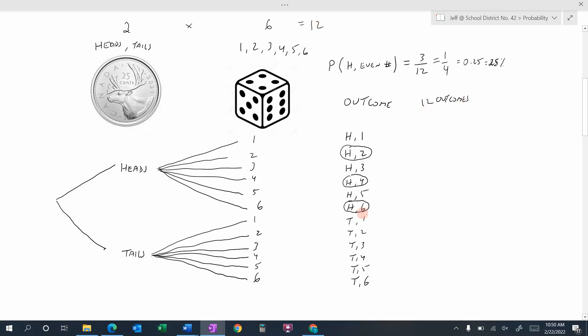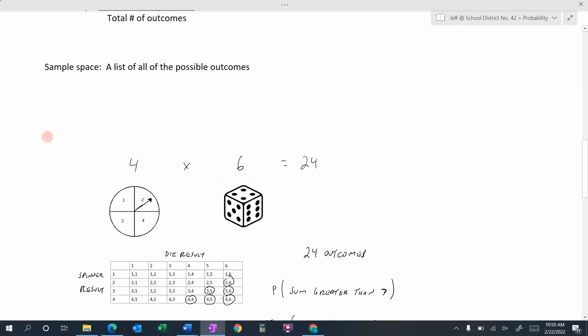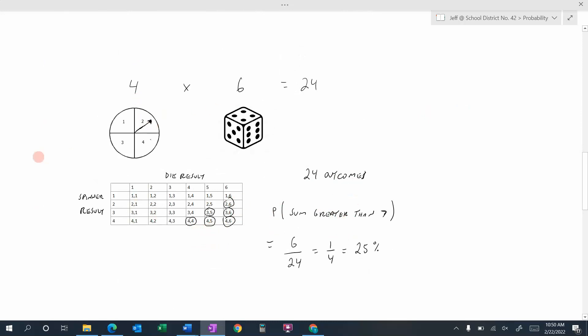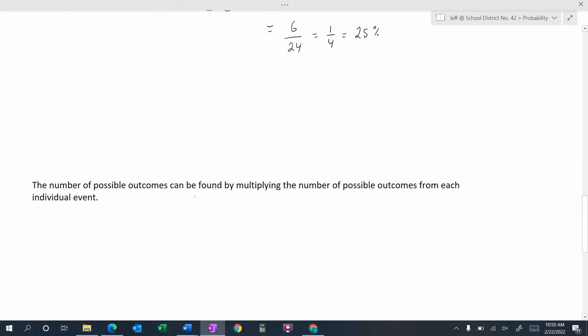So we don't have to do a tree diagram and we don't have to do a box or a grid like this to figure out the total number of outcomes. We do have to do it if we want to do some probability calculations in this case or so far. But if we just want to know the total number of outcomes, the total number of outcomes can be found by multiplying the number of possible outcomes from each individual event.